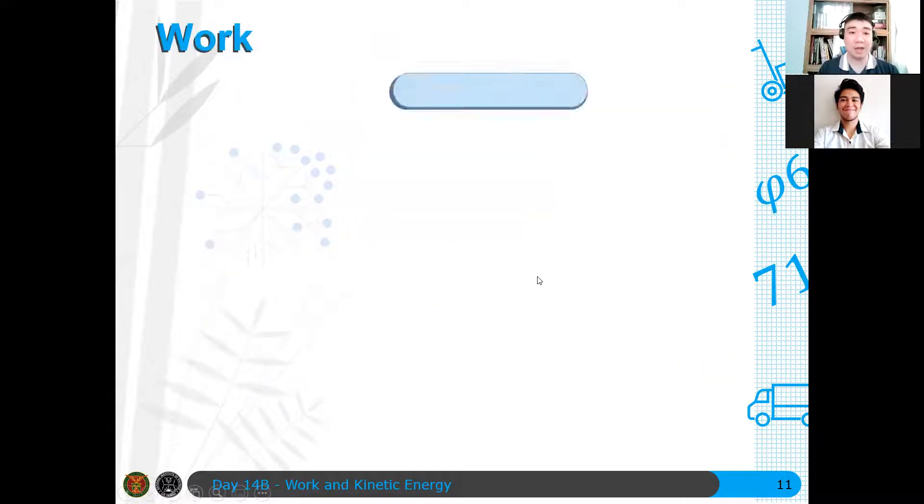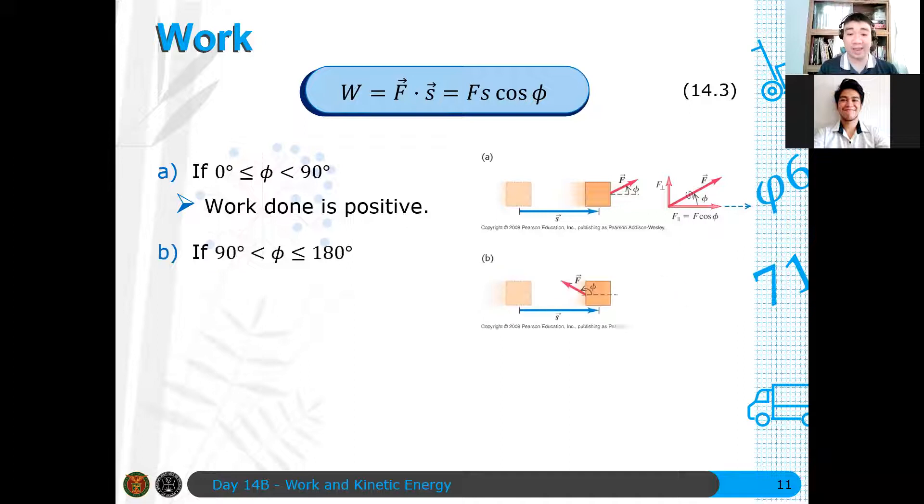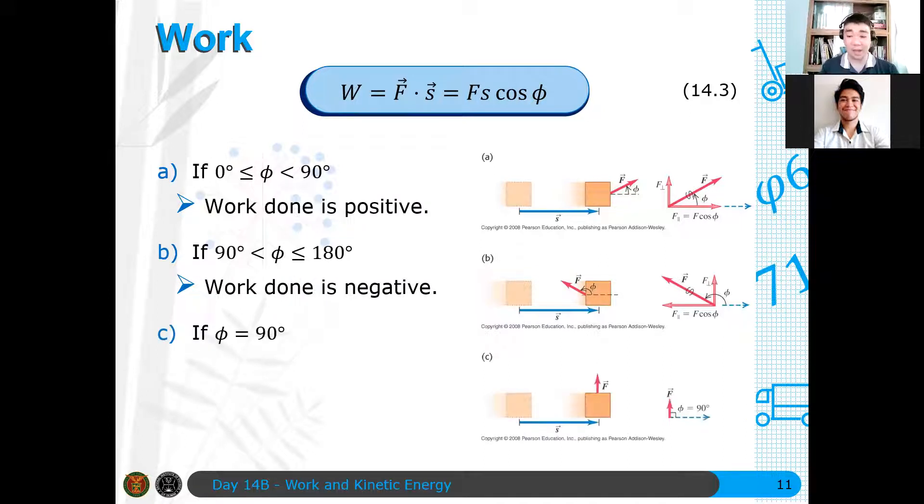Again, the work is just Fs cosine φ. If the angle φ is from 0 to 90 degrees, we expect that the work done is positive. And if the angle φ is from 90 to 180 degrees, then the work done will be negative because the component of force parallel to the direction of the displacement is now anti-parallel to it. Hence, what we expect is that the work done is negative.